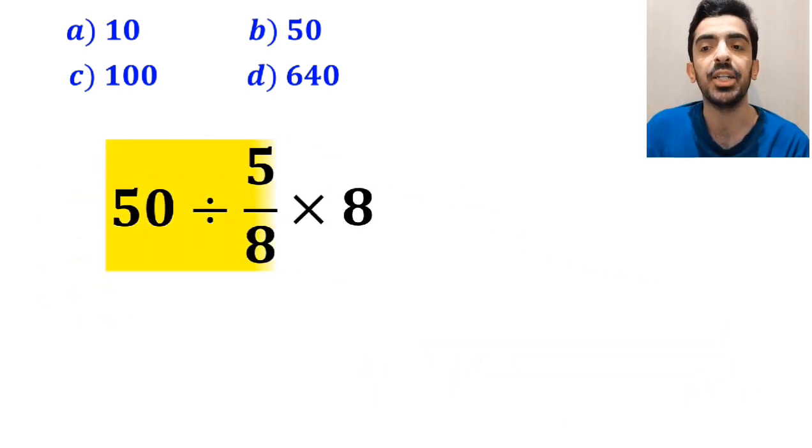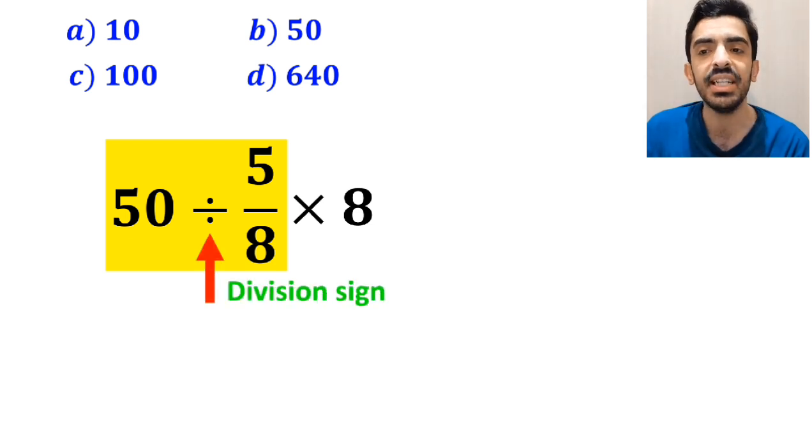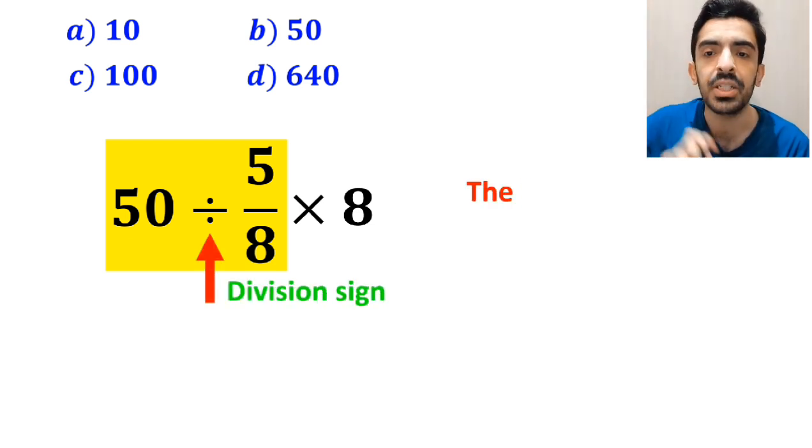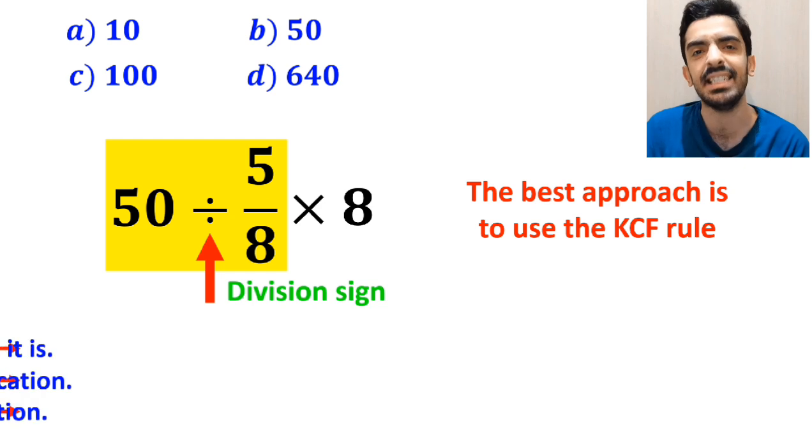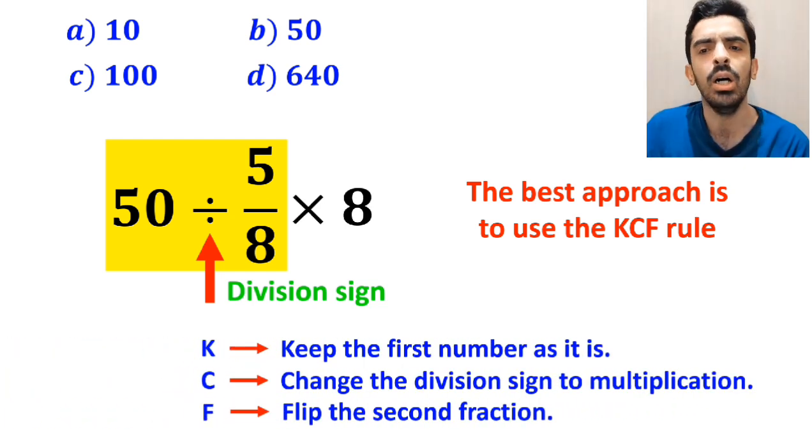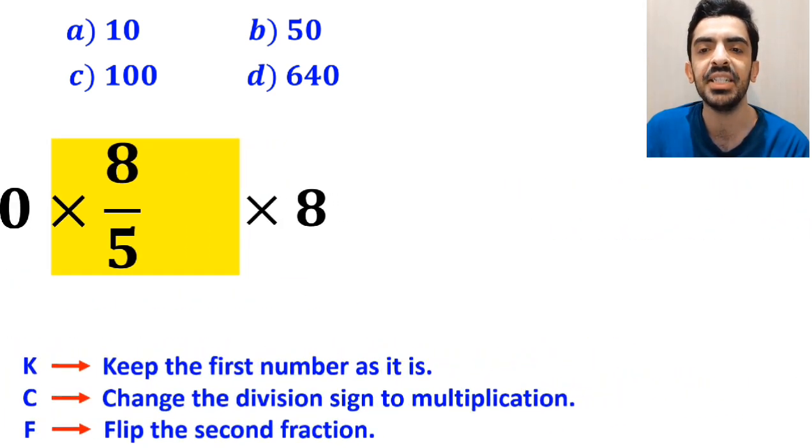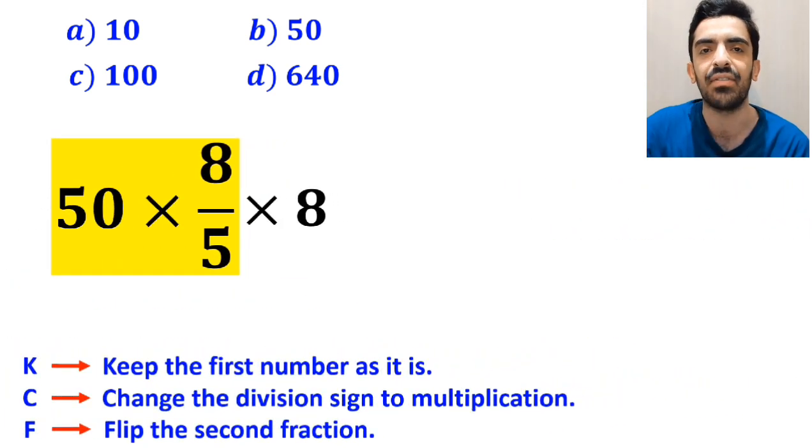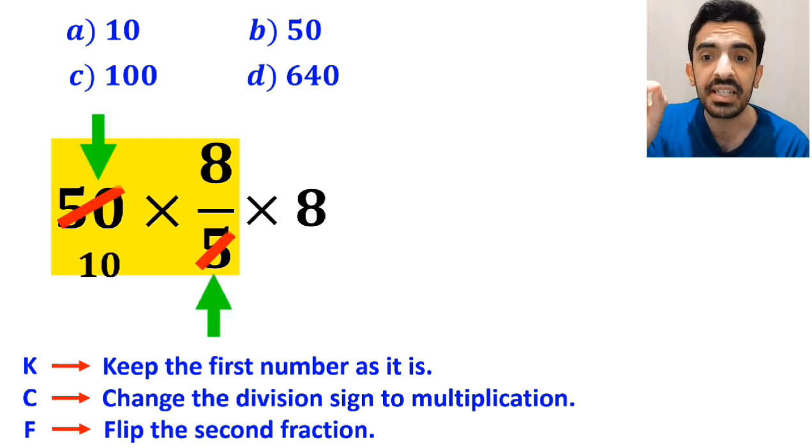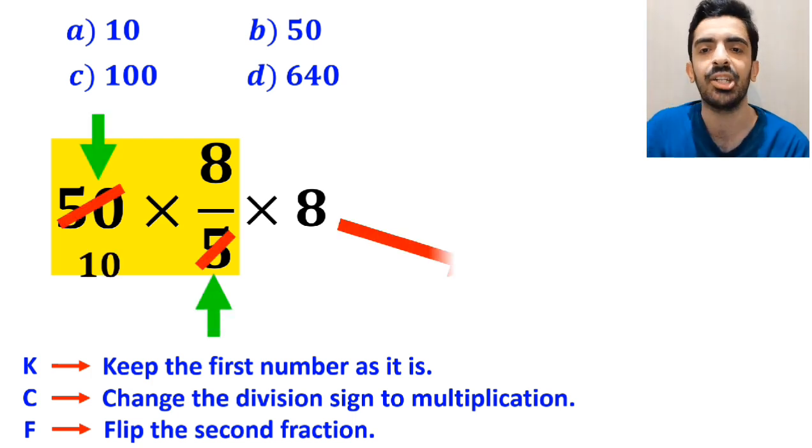We'll start with the expression 50 divided by 5 over 8. Whenever we see a division sign between two terms, the best approach is to use the KCF rule. So we remove the highlighted part and replace it with 50 times 8 over 5.